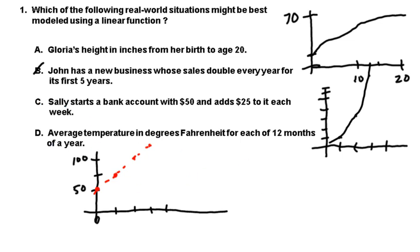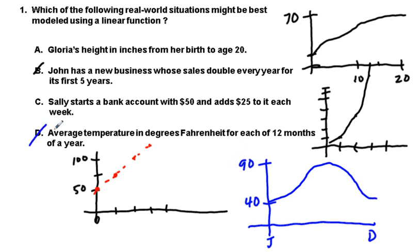D, average temperature in Fahrenheit for a year. If your average temperature ranges from 90 down to 40 like it does where I live in Texas, January through December, you're going to start out with average cool temperature, go up towards a high temperature in the summertime, then go down like this. Is that linear? No, it's not. So Sally's bank account is the best answer.